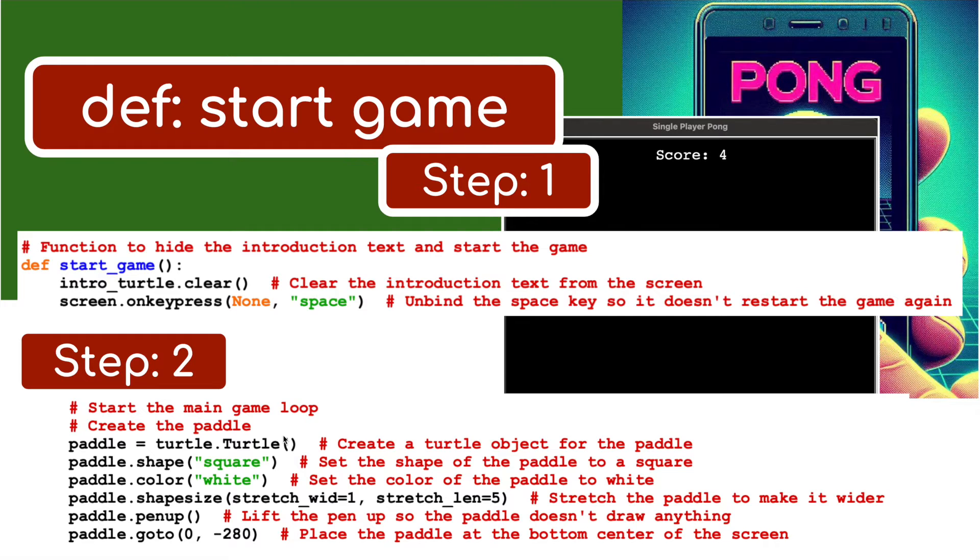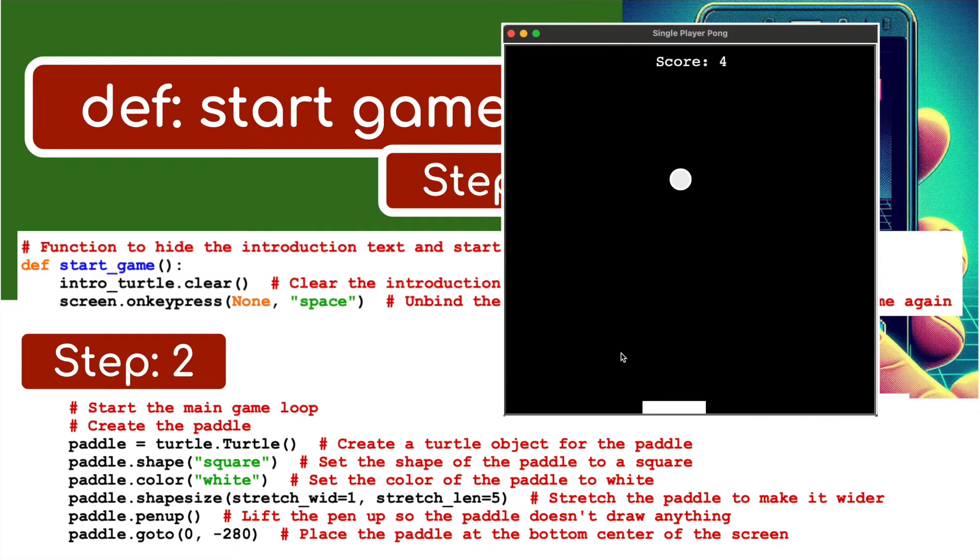Step two - we're going to create the paddle. Creating the paddle - that's this thing down here. paddle = turtle.Turtle() creates a turtle object. We're going to set the shape of the paddle to square and set it to white. But we're going to change the shape of the square. So shapesize is basically stretched in one but the length of it is going to be five.